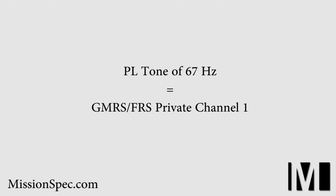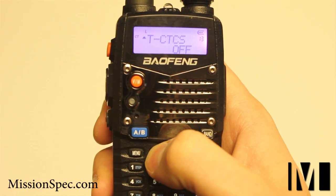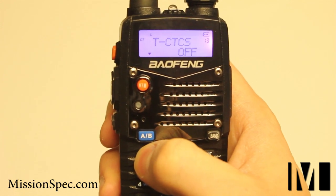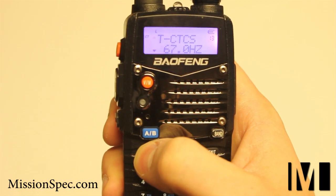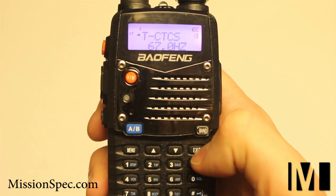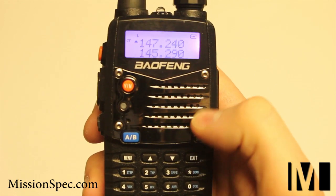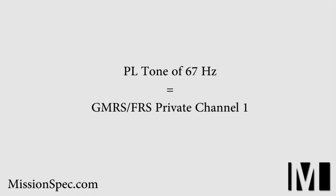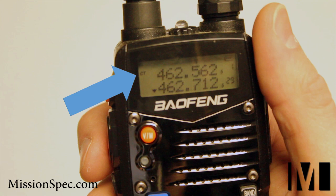Do not forget to set the transmit PL tone to the same setting of 67 Hz. Click Menu, navigate to TCTCS, then click Menu again. Set to 67 Hz, click Menu to confirm, then click Exit. If both the transmit and receive tone are set properly, you should see a small CT emblem on the left of your radio's display. When you click the Push to Talk button, the CT should stay. If it disappears when transmitting, then you have not properly set the transmit PL tone.